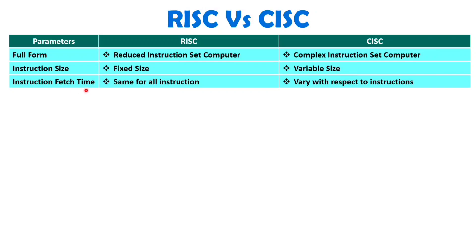Instruction fetch time is also the same for all instructions with RISC, but instruction fetch time varies with respect to the instruction in CISC. For complex instructions you need more fetch time, and for simple instructions it takes less time. So based on complexity, instruction fetch time changes with CISC architecture, while with RISC it is constant for almost all instructions.